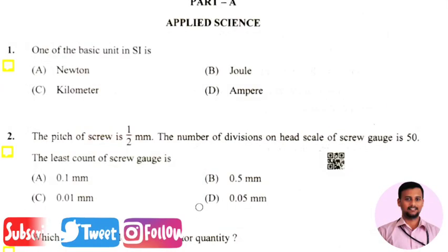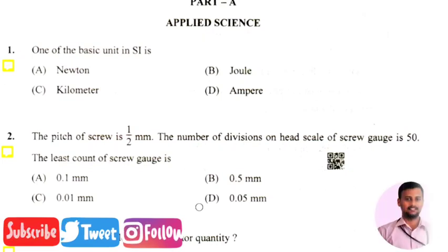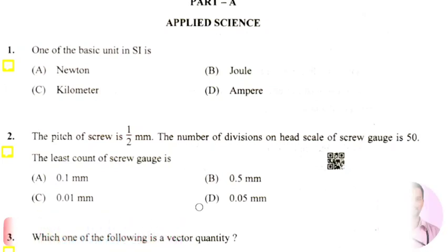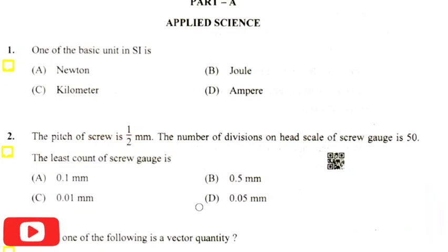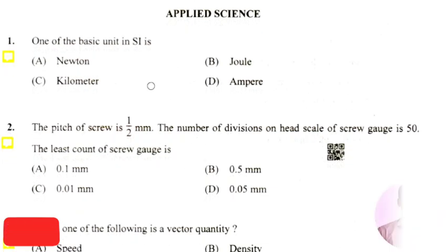Hello my dear students. Today in this video we are going to solve the Applied Science section of a Diploma CT 2019 examination. This Applied Science section is common to all branch students, and the same questions will be asked for all branches.